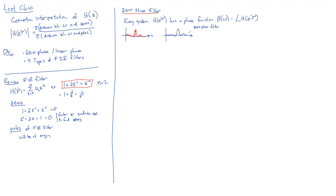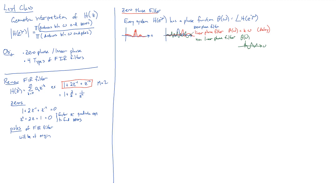If you put it into a linear phase filter — one in which the phase function is a linear function of omega, where k is often negative — you might end up with something that looks like a delayed version. In other words, it's just a delay. But if you put it through a nonlinear phase filter, where theta of omega versus omega is nonlinear, you might end up with something that looks completely unrelated in the time domain to your original waveform.